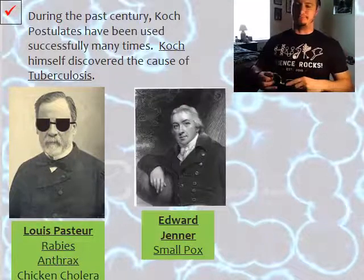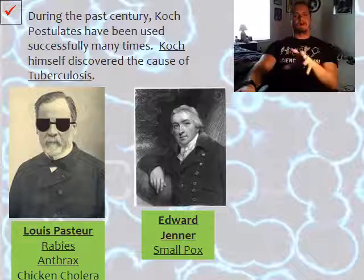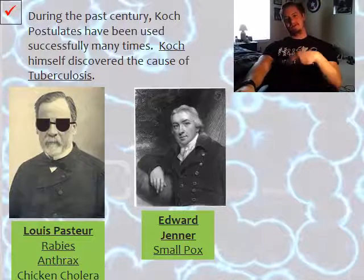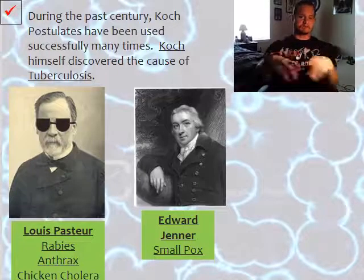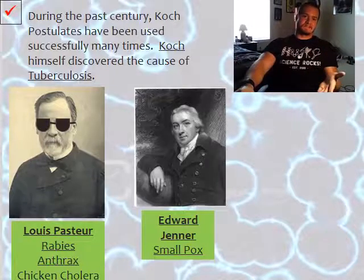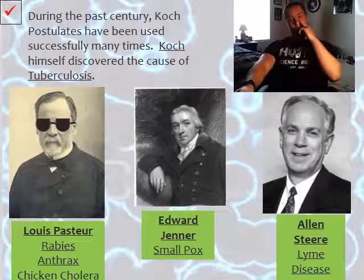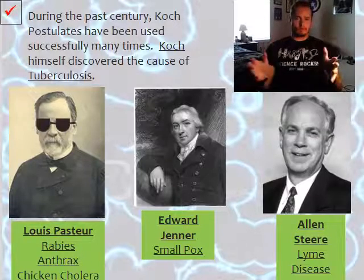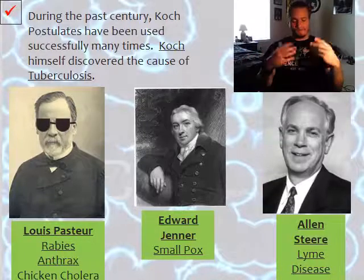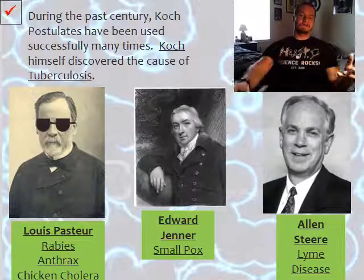Edward Jenner found the cause of smallpox. He discovered that people infected with cowpox were not infected with smallpox, and he used this to create one of the first vaccines. Alan Steer found the cause of Lyme disease — which is particularly relevant in this area of Virginia, where ticks are everywhere. Isolating pathogens and finding out what causes disease played a huge part in how we combat sickness.